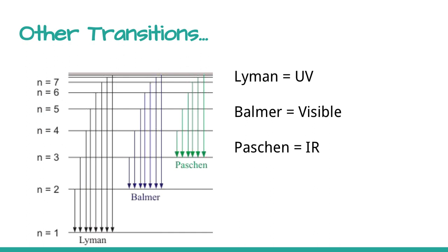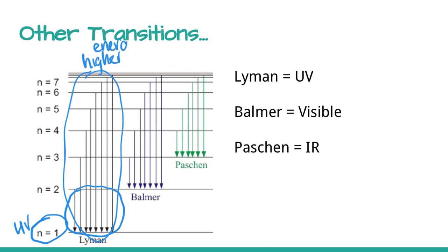You can have transitions back down to the n equals one level, but you can't actually see that in the visible spectrum. This is happening in the UV end of the spectra because these changes are much higher, bigger transitions. So they are higher energy, below the violet end of the spectrum. Very high energy transitions. The set of transitions we see are the ones that go back to n equals two, and these happen in the visible spectrum.